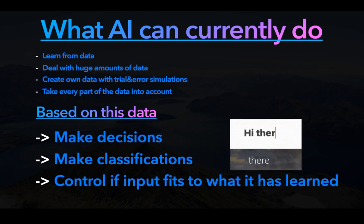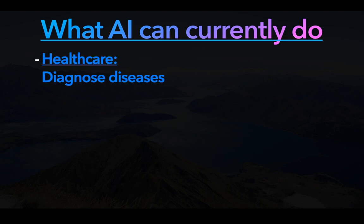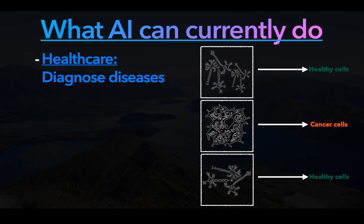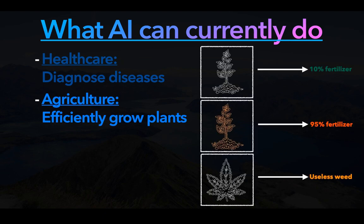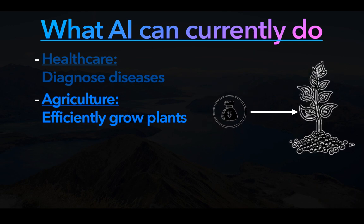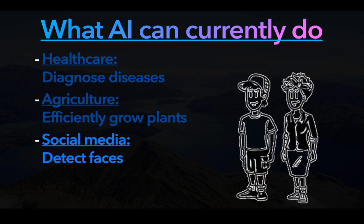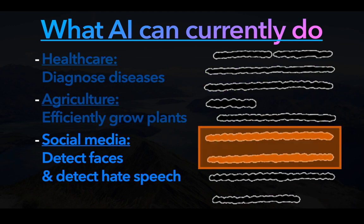This can be used in many different ways, so here are some examples of fields where AI technology is used. In healthcare, AI can be used to diagnose diseases — for example cancer — based on pictures of cells from the body, with extremely high accuracy. In agriculture, AI can be used to grow crop plants way more efficiently by finding out which plants need exactly how much fertilizer and which don't need any, by driving over a field and filming it, thereby helping to use fewer resources to grow more crops. In social media, AI is used to detect facial features in pictures and automatically suggest tags, and it is also used to detect hate speech, racism, or sexism, helping to prevent such posts from appearing.